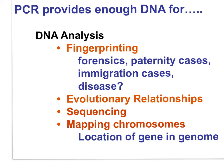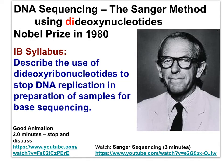Now we will digress with a short section on Fred Sanger's method of sequencing DNA. Fred Sanger's dideoxynucleotide technique for sequencing DNA fits here because it uses gel electrophoresis, and it would be used to sequence pieces of DNA following amplification using PCR. The IB syllabus statement for HL students only is: describe the use of dideoxyribonucleotides to stop DNA replication in preparation of samples for base sequencing.